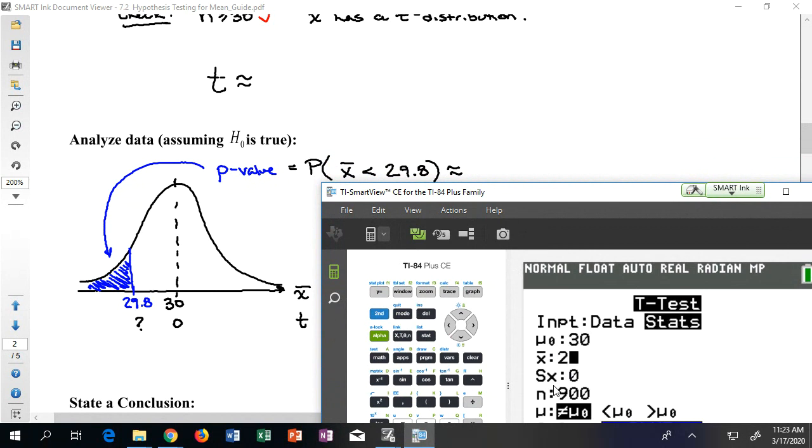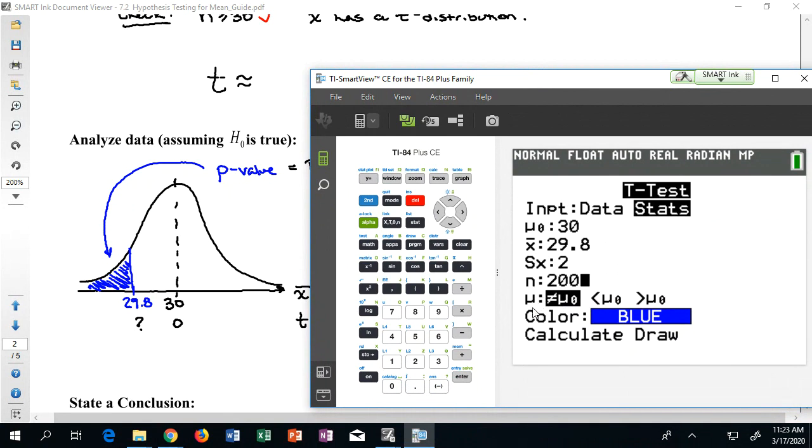My mu zero is 30. That's from the hypotheses. My average is 29.8. My standard deviation was two. And my n was 200. The last piece here again is my alternative hypothesis. It's a fill in the blank. Make sure you're reading it as a sentence. This is the average is not equal to 30. The average is smaller than 30, or the average is bigger than 30. Now, according to what the consumer advocate thought, we thought less than 30.